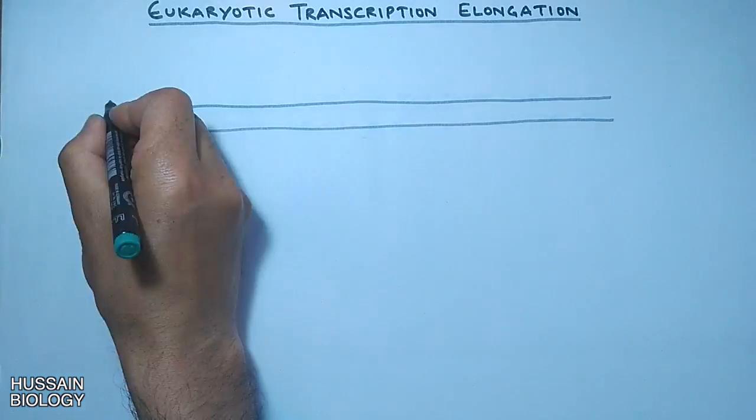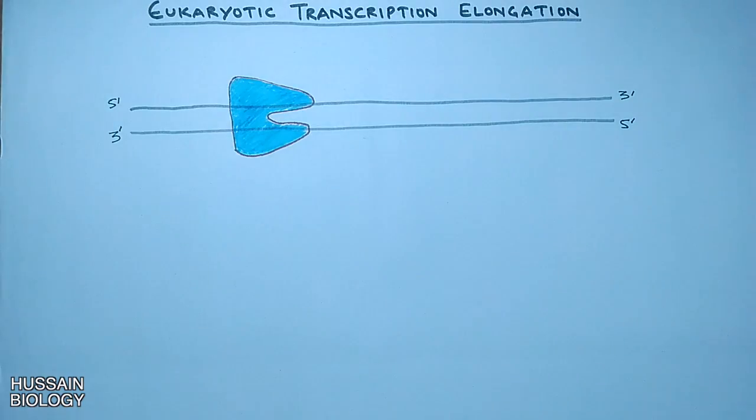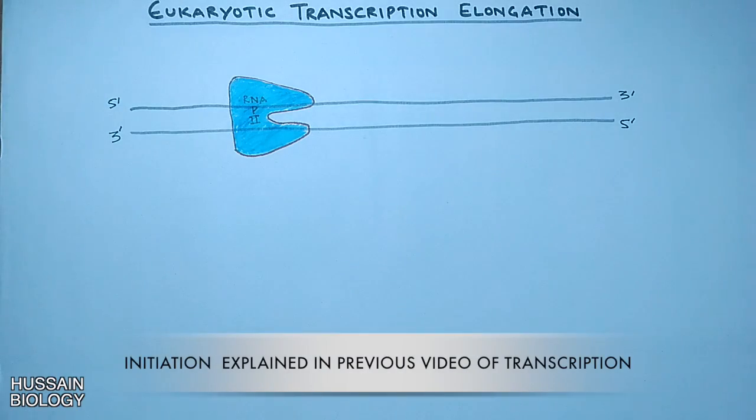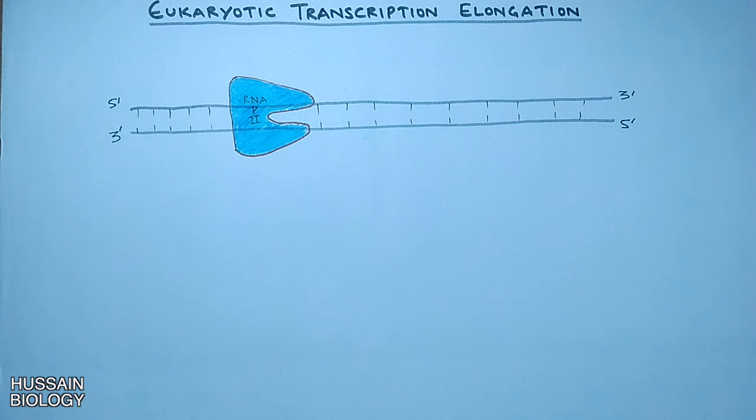First of all we see the DNA molecule and on that DNA molecule the RNA polymerase is already bound near the TATA box by the help of transcription factors which we have already discussed in the initiation video.